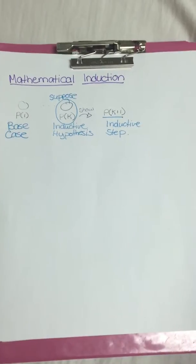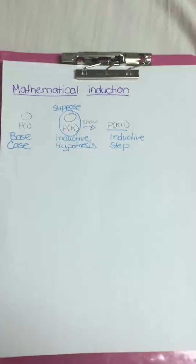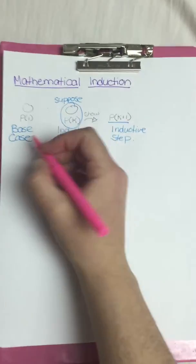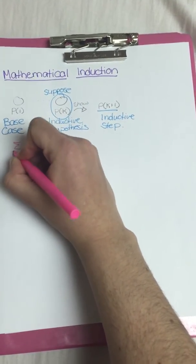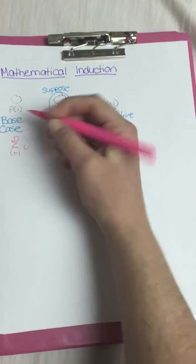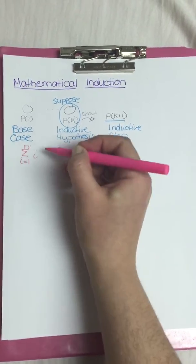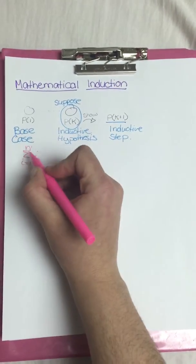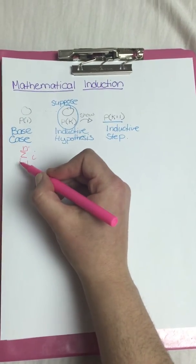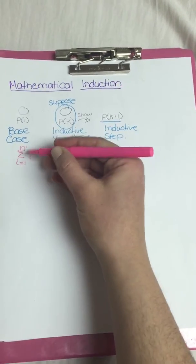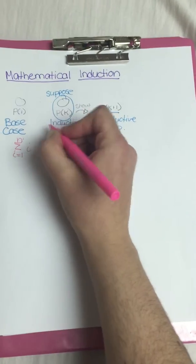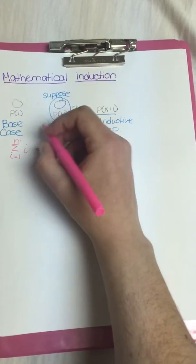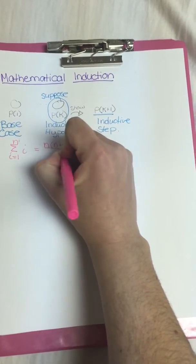The best way to teach mathematical induction is through an example. So let's do one of the most basic theorems in number theory. The equality is the sum from i equals 1 up to n of i. So this just means sum. You start with the index and you go 1 plus 2 plus 3 plus 4 all the way up to n. We're going to prove that this is equal to n times n plus 1 all over 2.